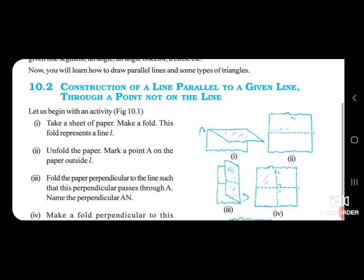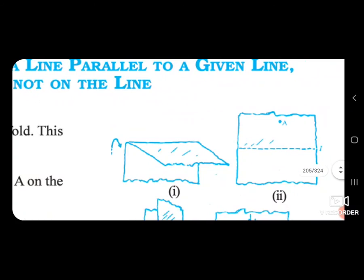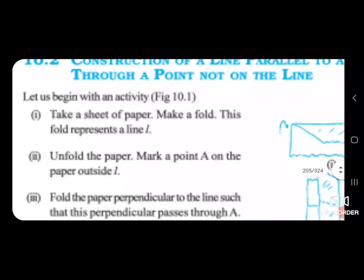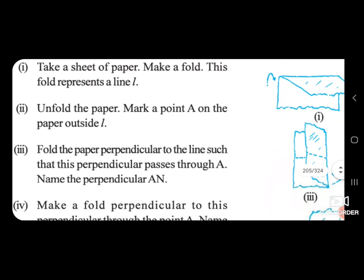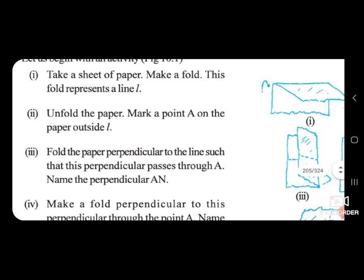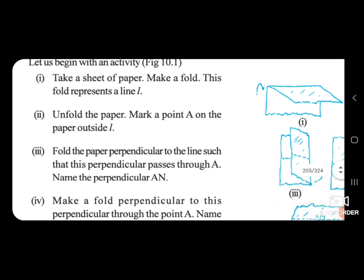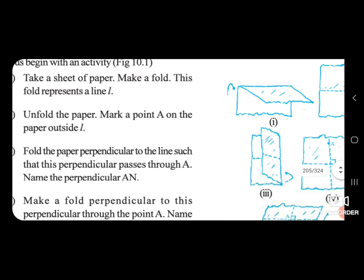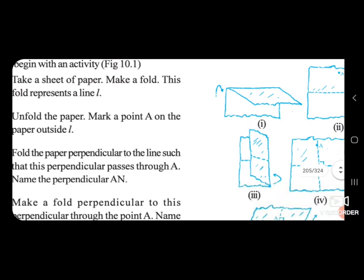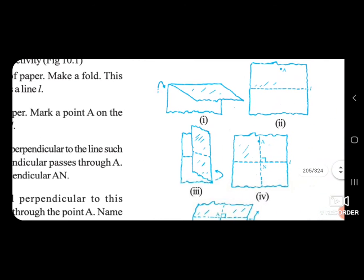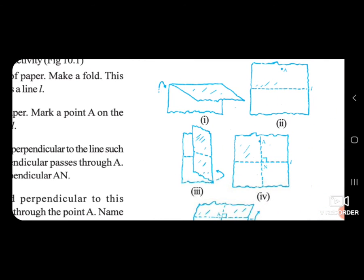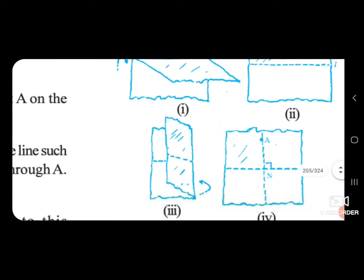Unfold the paper. Make a point A on the paper outside line L. Fold the paper perpendicular to the line such that this perpendicular passes through A. Name the perpendicular AN.